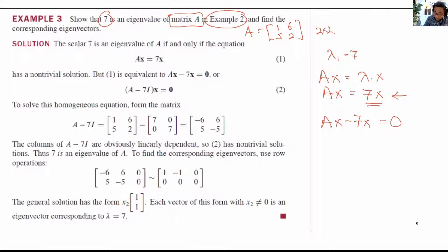Of course, you could have done it the other way around by moving the left-hand side to the right-hand side. It means 0 equals 7x minus Ax. So both are actually the same equation. It doesn't matter. So in our example, we are going to do it this way.